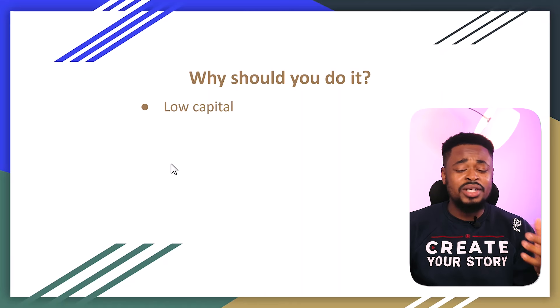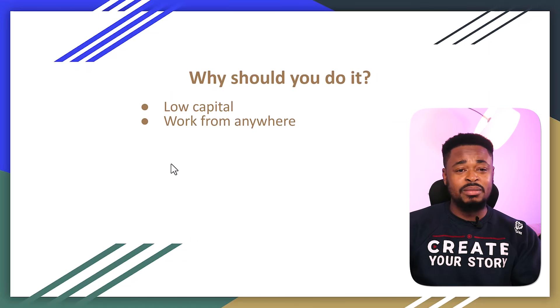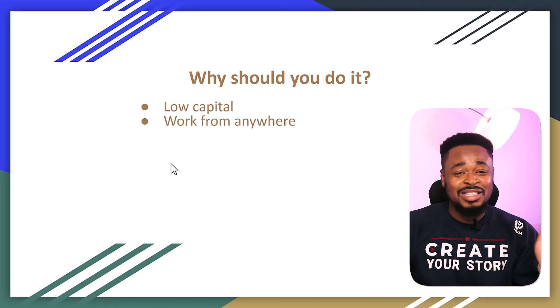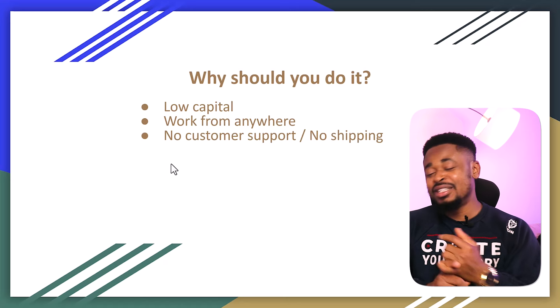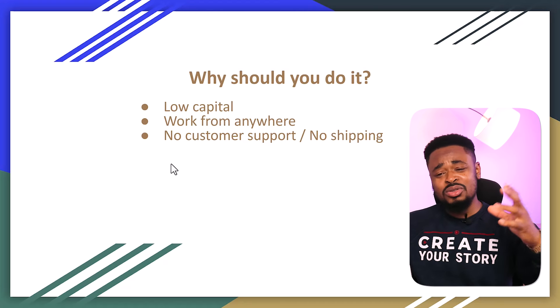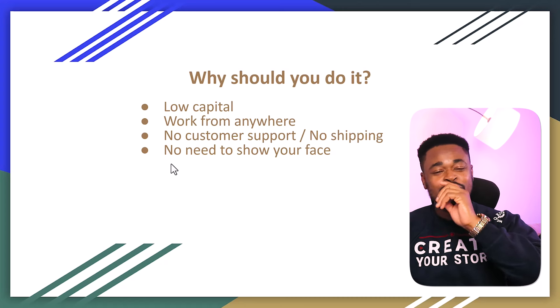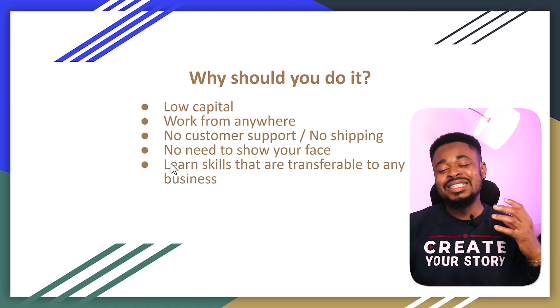So that's the easy explanation of affiliate marketing — getting commission from the sale of a product. Why should you do it? Number one, it needs low capital. You don't need hundreds or thousands of dollars to start. All you need is your time. You can work from anywhere — your house, your bedroom, wherever you are. You can work from your nine-to-five job and still make money from affiliate marketing. There is no customer support, no shipping. You're not shipping any product to anybody and not dealing with customer complaints.